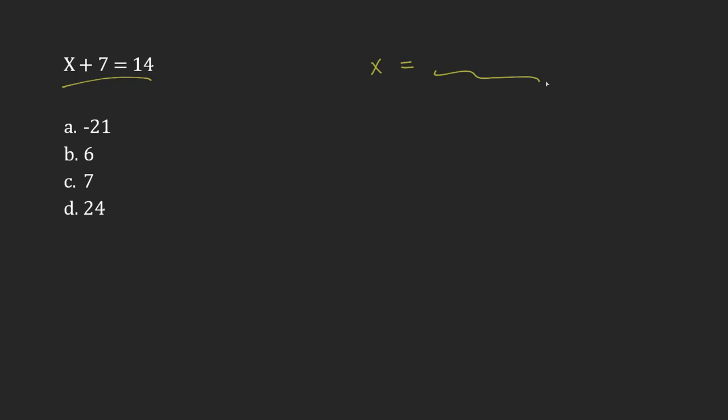Now, the way that you can do that is by essentially undoing anything that's happening to x. For example, x is having 7 added to it, and the way you would undo that is to simply do the opposite. If you're adding 7, then minus 7.